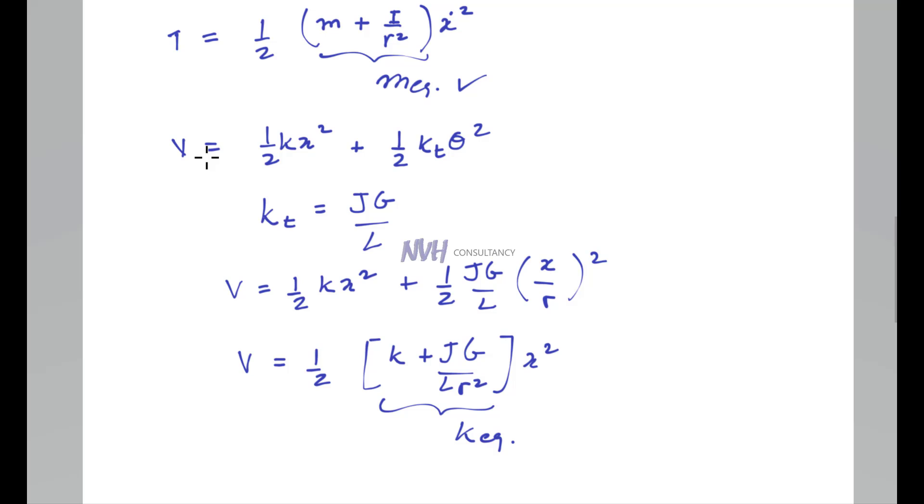So these are the two solutions: one is M eq and the second is K eq. These are the equivalent mass and stiffness of our system. That's the end of the problem.